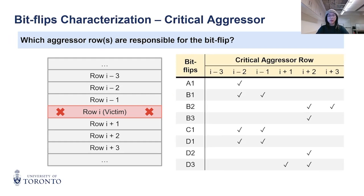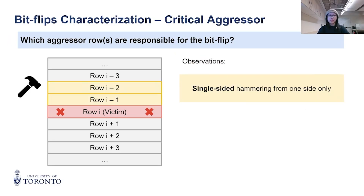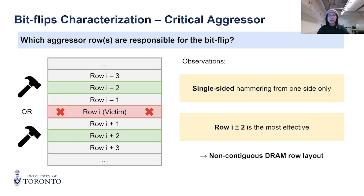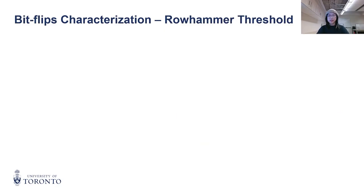From the table, we observed that bit flips can only be triggered by rows from one side only, and rows at R±2 are the most effective. This suggests that DRAM row layout is not contiguous.